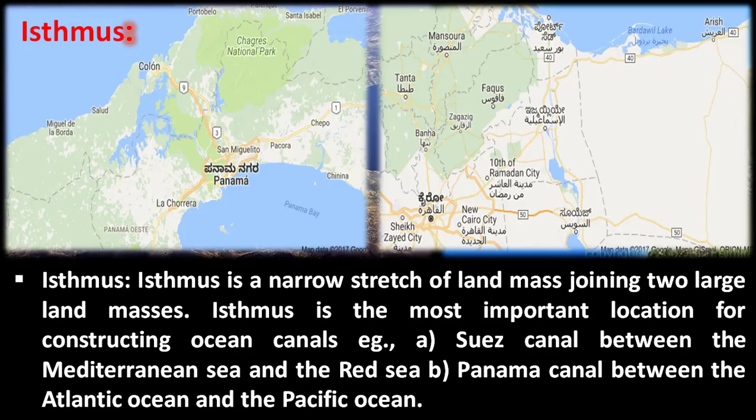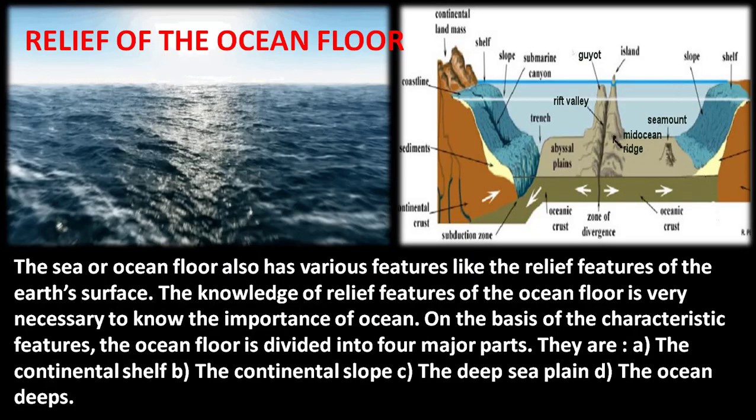The next concept is an isthmus. An isthmus is a narrow stretch of land joining two large land masses. It is the most important location for constructing ocean canals. Examples include the Suez Canal between the Mediterranean Sea, and the Panama Canal connecting the Atlantic Ocean and Pacific Ocean.